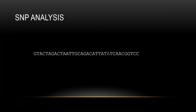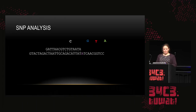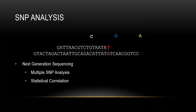Die SNP-Analyse wird so gemacht: Man sucht eine bekannte Sequenz, markiert die Basen und schaut, welche Base vorhanden ist. Das kann man mit Next-Generation-Sequenzierung machen, einer sehr neuen Technik. Man kann viele SNP-Analysen gleichzeitig machen – das ist sehr schnell. Das Ergebnis ist eine statistische Korrelation, welche Person welche SNPs hat.